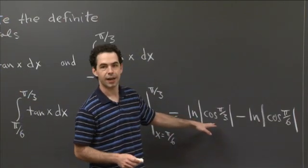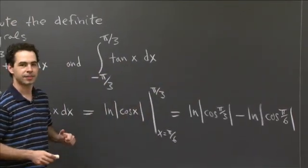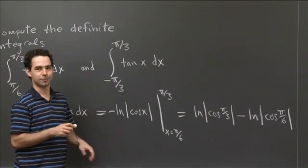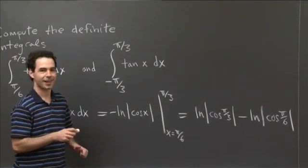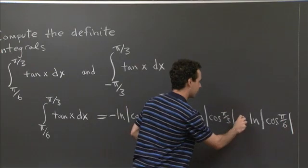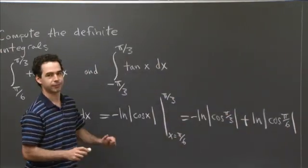So cosine of pi over 3 is, oh, I'm sorry, I've made a mistake. So it's not ln of absolute value of cosine x, it's minus ln of absolute value of cosine x. Sorry about that. So this is minus ln cosine pi over 3 plus, okay, so minus a minus there is plus. All right. Sorry about that.